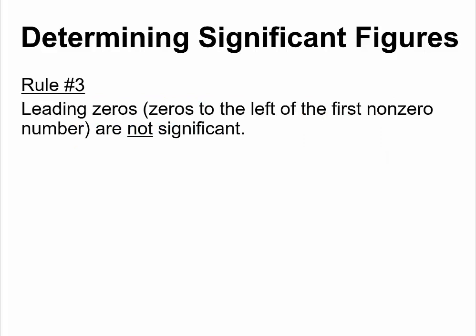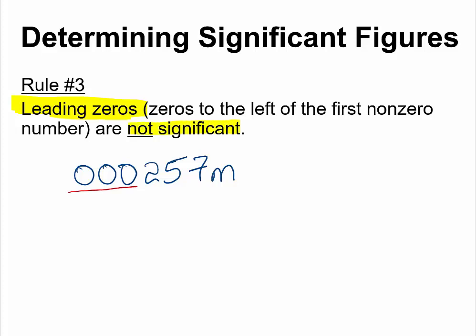Rule number three: leading zeros. What does that mean when we say leading zeros? It means zeros that are to the left of the first non-zero number. For example: 0.00257 meters. All of these zeros are called leading zeros. They are not significant — they are only placeholders. Which means this measurement will simply be a three significant figures number.